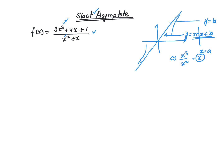So how do I find out what that straight line is? The easiest way is to take this rational function and do a very basic, simple long division. My divisor is x squared plus x, and my dividend is 3x cubed plus 4x plus 1.